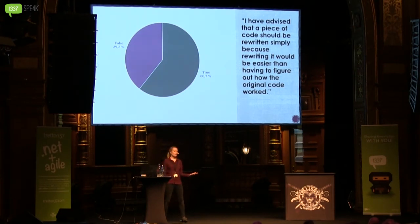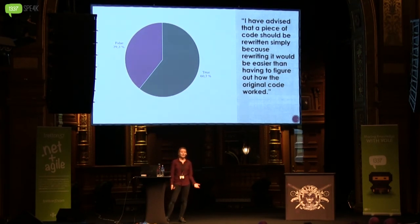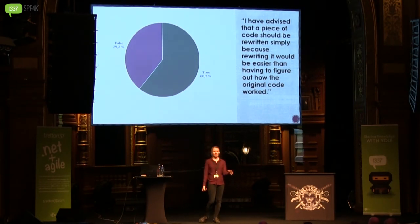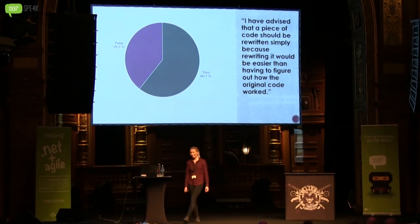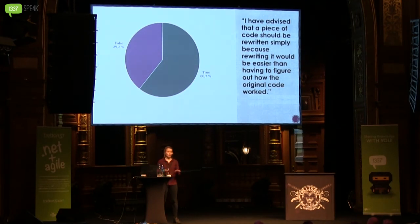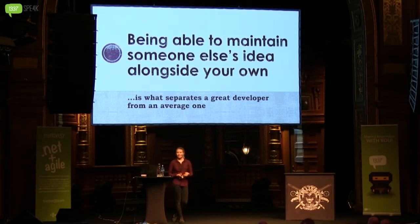And remember all those developers who believe their code will still be alive 10 years from now? The statistics were roughly the same for them. But isn't expecting your code to live long while being quick to rewrite code somewhat contradictory? Doesn't that increase the chances of someone else looking at your code, thinking 'this is crap,' and rewriting it before your code even makes it to its 10-year anniversary? Being able to maintain someone else's idea alongside your own is what separates a great developer from an average one.